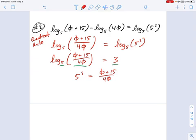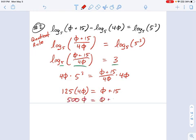So here we are at 5 cubed equals 5 plus 15 over 4φ. And the way you solve this is you just, first of all, we need to get rid of fractions. 5 cubed is 125. I'm going to multiply each side by this 4φ. So we get 125 times 4φ equals 5 plus 15. And now we're going to say, well, what's 125 times 4? That's 500φ equals 5 plus 15.